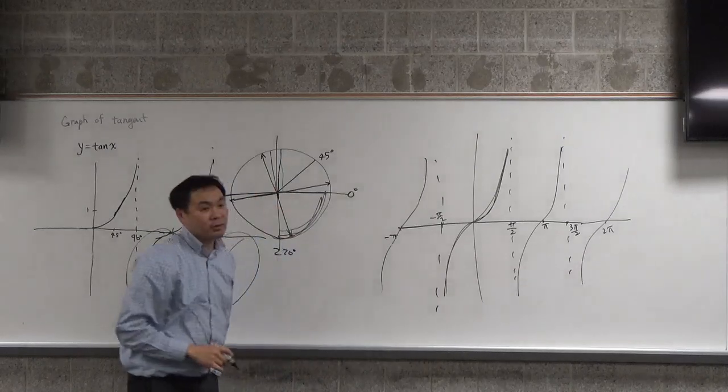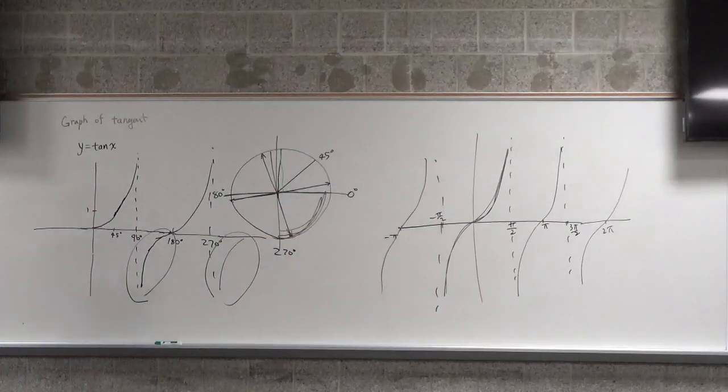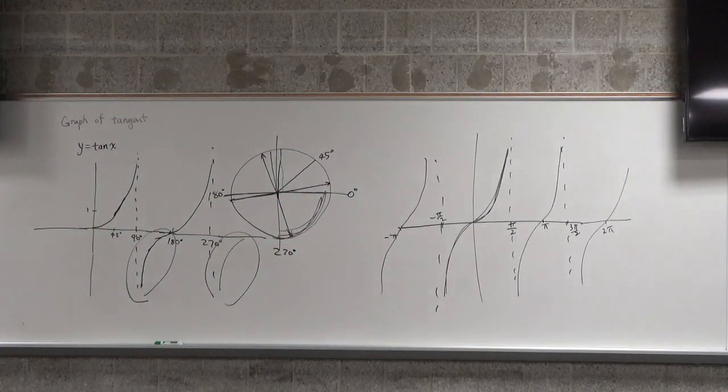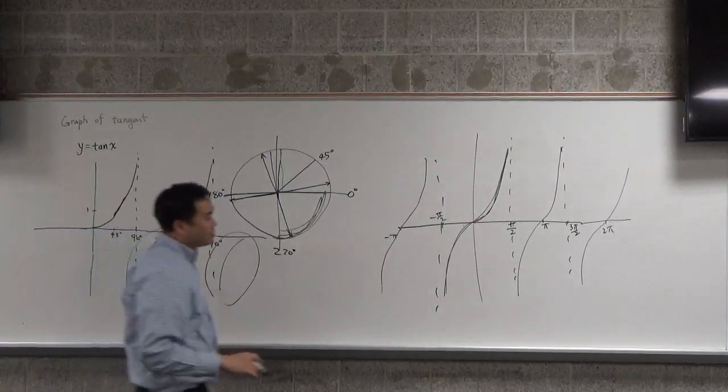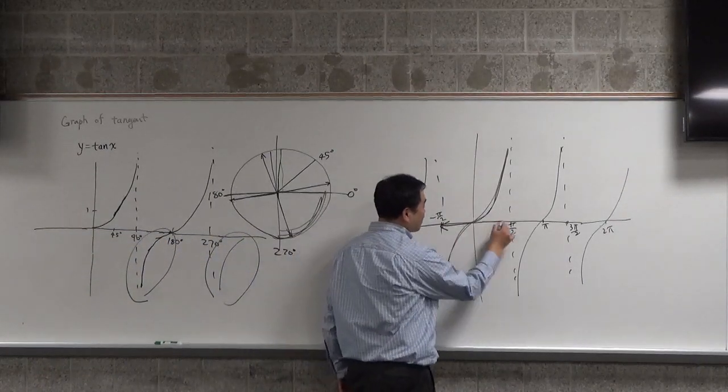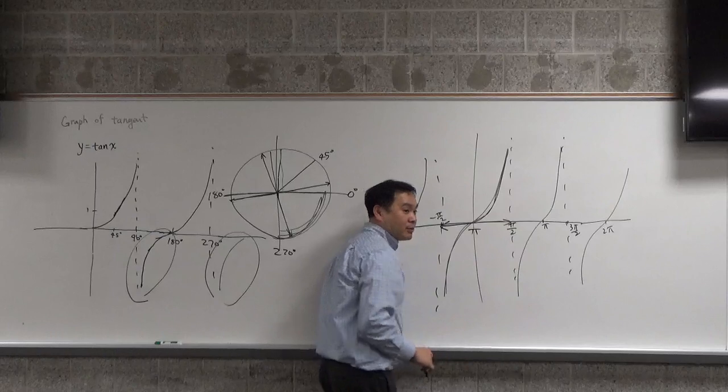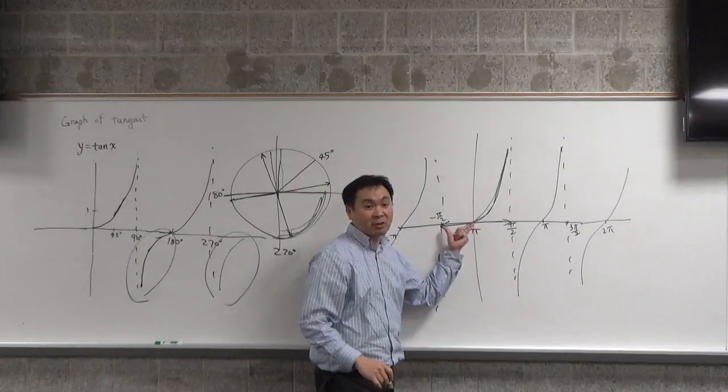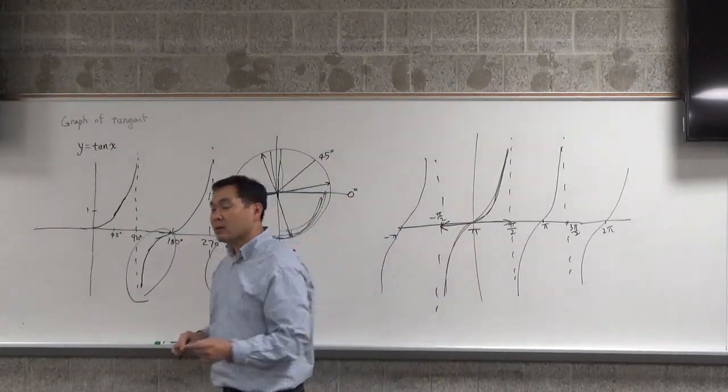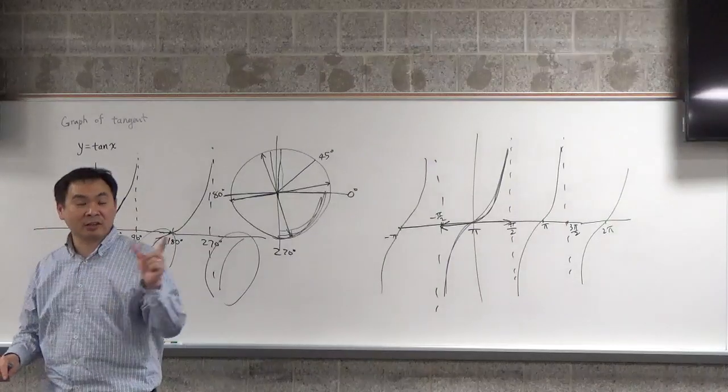So you have the graph of tangent as something that repeats every pi. The length between here to there is pi, because there's a half of pi, there's another half of pi that's pi, right? And that portion will be repeated again and again.